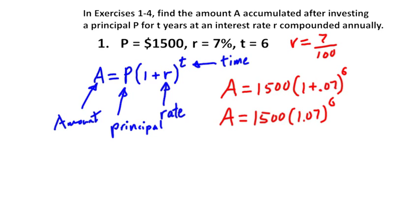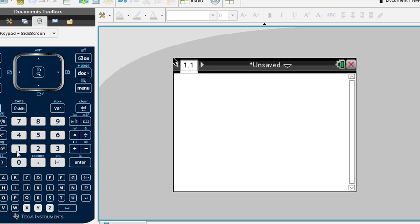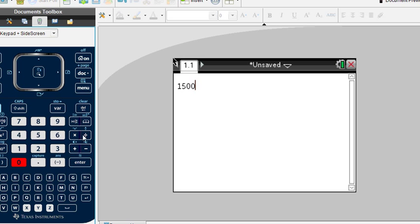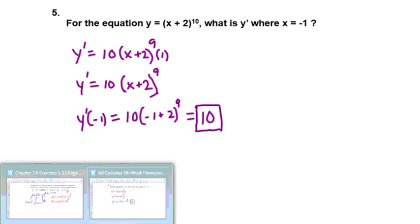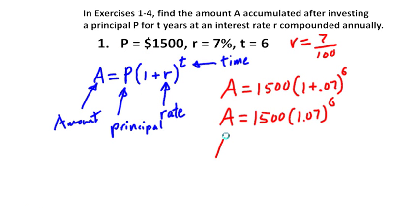We can go to our calculator and put in 1,500 times 1.07 to the power of 6. And we have 2,251 dollars and 10 cents.